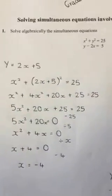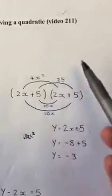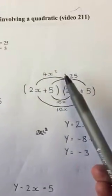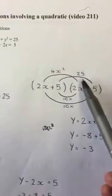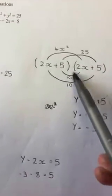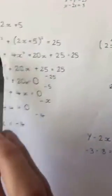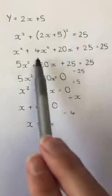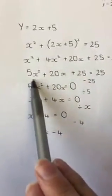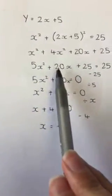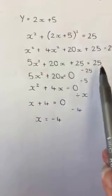We then need to expand these brackets which I've done over here. We get 4x squared, 25, 10x and 10x. These obviously add together to get 20x and we've put this over here. These two together make 5x squared plus 20x plus 25 equals 25.